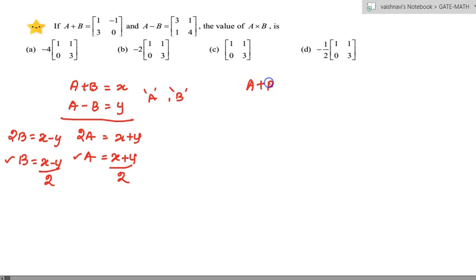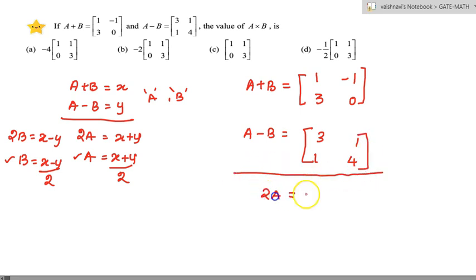First, A plus B matrix is equal to [1, -1; 3, 0]. A minus B matrix is equal to... when you add both the matrices. Likewise, you do to find the B matrix.